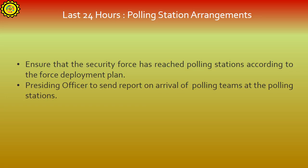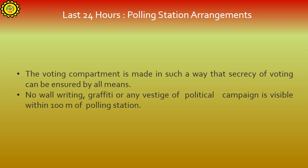Polling station arrangements: Ensure that the security force has reached polling stations according to the force deployment plan. The presiding officer should send a report on arrival of polling teams at the polling stations. The voting compartment must be made in such a way that secrecy of voting can be ensured by all means. No wall writing, graffiti, or any vestige of political campaign should be visible within 100 meters of the polling station.